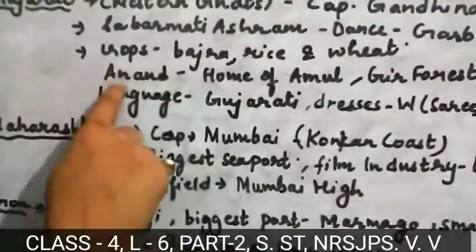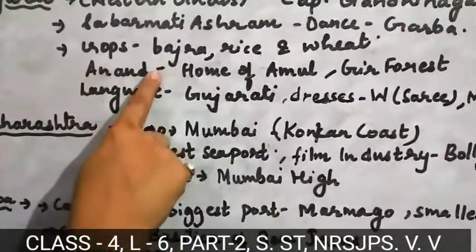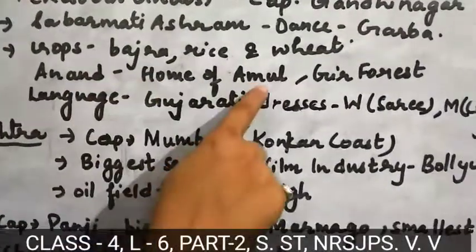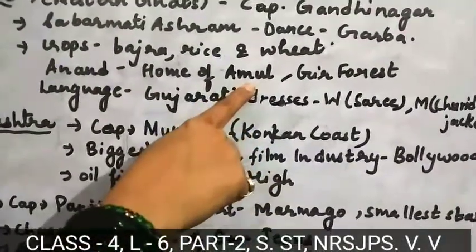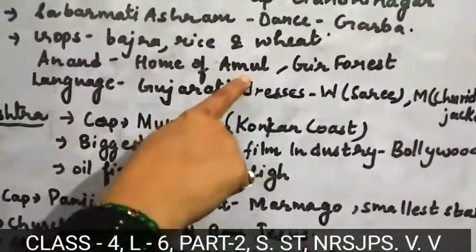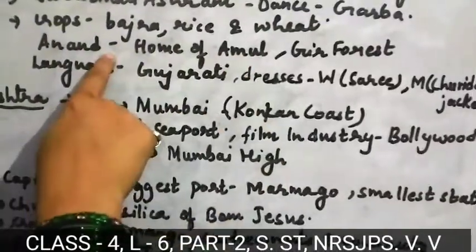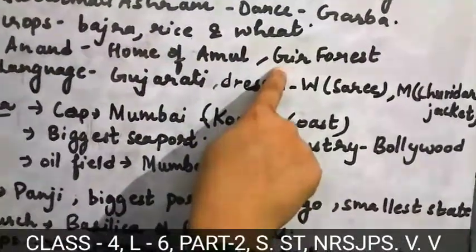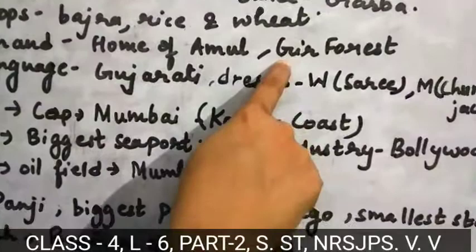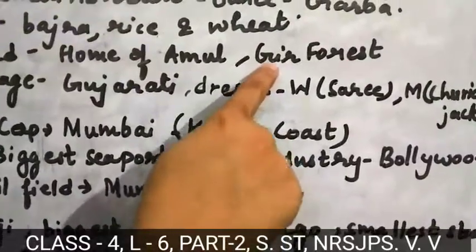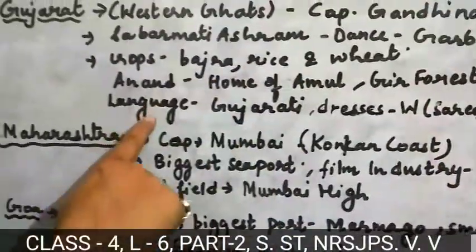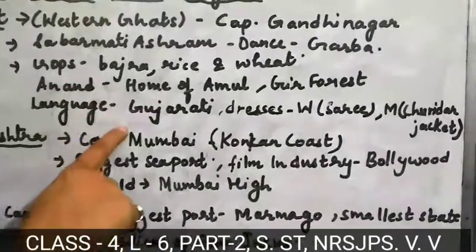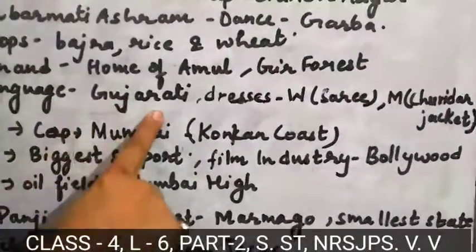There is one Anand industry, which is the home of Amul. All the products of Amul — like Amul butter — come from this Anand industry. One famous forest located here is the Gir Forest. The language people speak there is Gujarati.